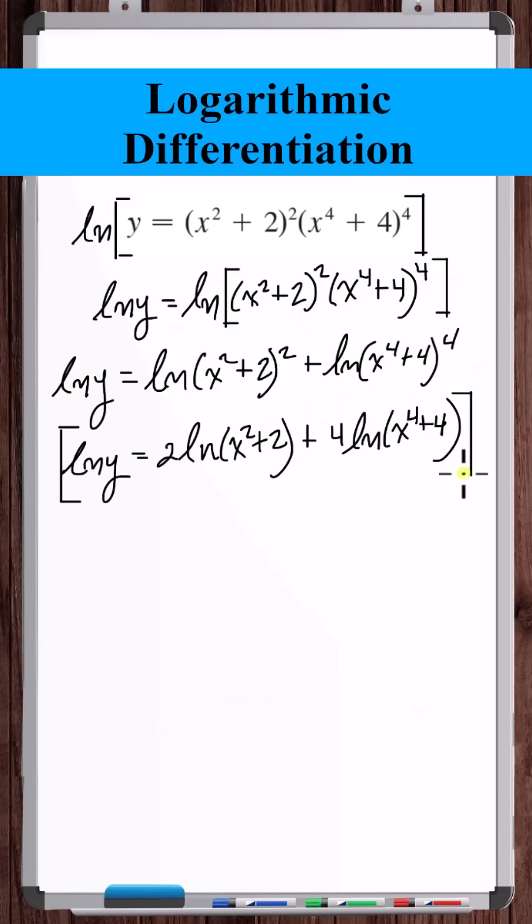Now let's take the derivative with respect to x of the entire equation. The derivative of natural log of y is 1 over y, y prime.